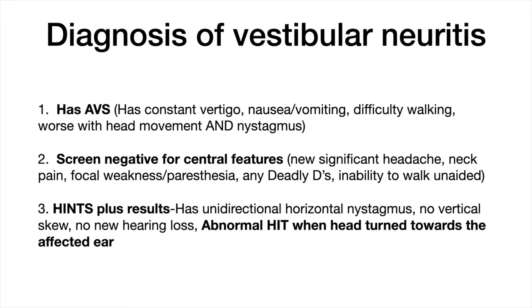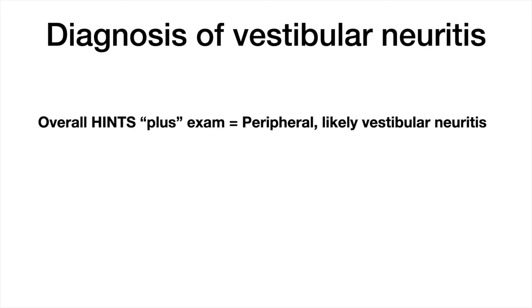In summary, to diagnose vestibular neuritis: the patient must have acute vestibular syndrome, screen negative for central features, and all four components of the HINTS-plus exam must show a peripheral result — including an abnormal head impulse test when the head is turned rapidly towards the affected ear. When you see that, the overall HINTS-plus is peripheral and they almost always have vestibular neuritis. If you want to learn more on how to perform the head impulse test, watch the linked video for tips to hone your skills on this bedside test.